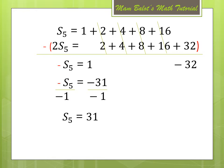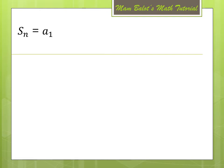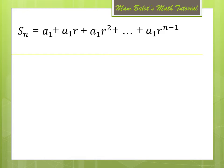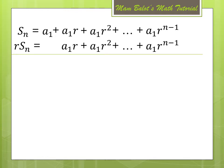Now we will use this process to derive the formula of the sum of the geometric sequence. We have S sub n equal to a sub 1 plus a sub 1·r plus a sub 1·r squared, plus and so on, until the last term a sub 1·r to the n minus 1. Using the same process, we multiply the whole equation by r, so r·S sub n equals a sub 1·r plus a sub 1·r squared, plus and so on, plus a sub 1·r to the n minus 1, plus a sub 1·r to the n.